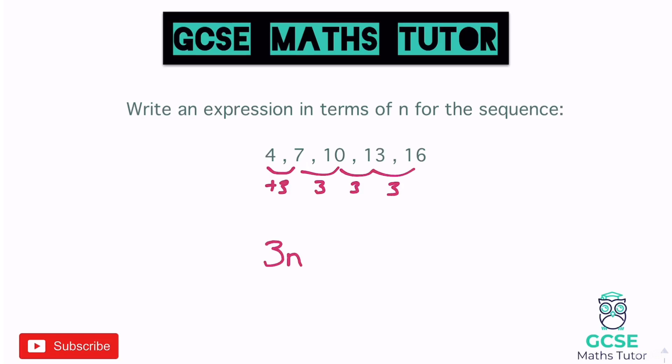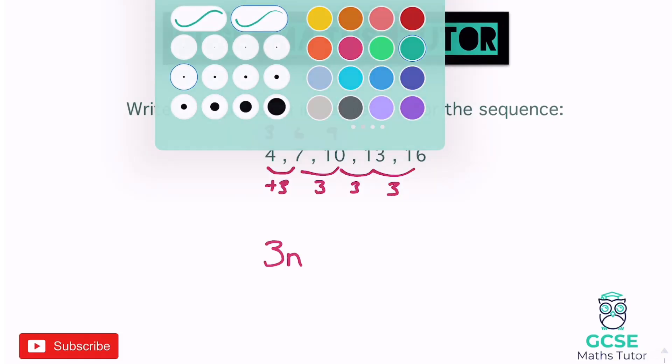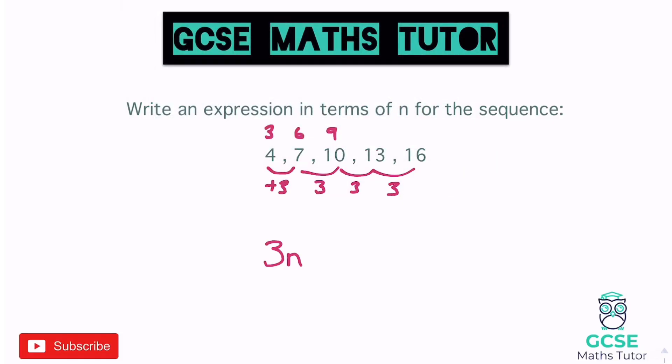3n means any number you substitute in gives the three times table: sub in 1 you get 3, sub in 2 you get 6, and so on. But our sequence isn't exactly the three times table — the first term of the three times table is 3, then 6, 9... Our sequence is one bigger each time: 3 to 4 is +1, 6 to 7 is +1. So it's the three times table plus one, giving us 3n + 1 as our nth term.